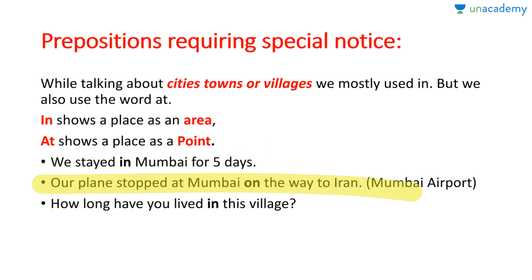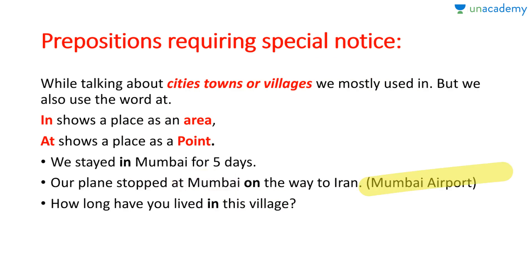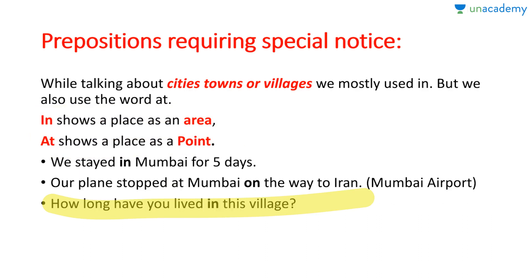When I say 'our plane stopped at Mumbai on the way to Iran', we were going to Iran and our plane halted at Mumbai. Here 'at Mumbai' means Mumbai as just a point — imagine only the Mumbai airport, not the whole city. I had not seen the whole Mumbai; I just stopped at Mumbai airport. So when we use 'at', it refers to a destination as a point, whether a bus station, rail station, or airport. Another example: how long have you lived in this village?